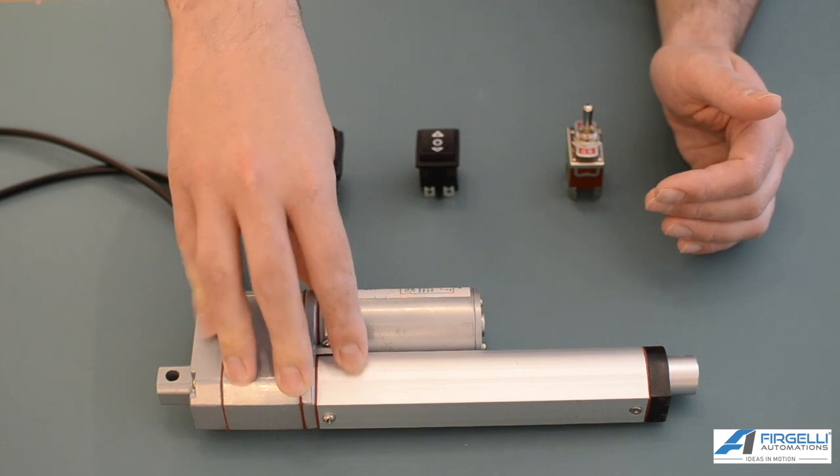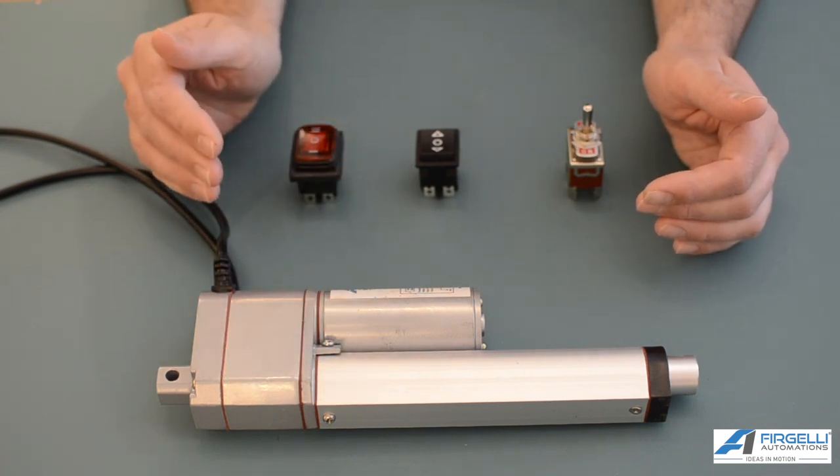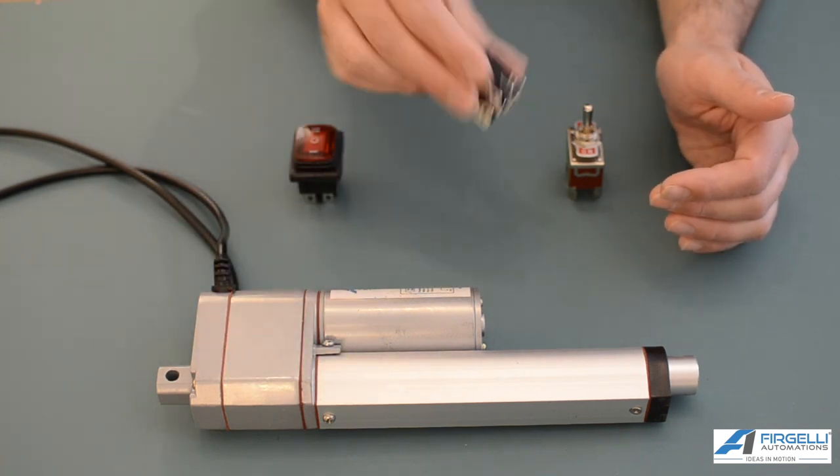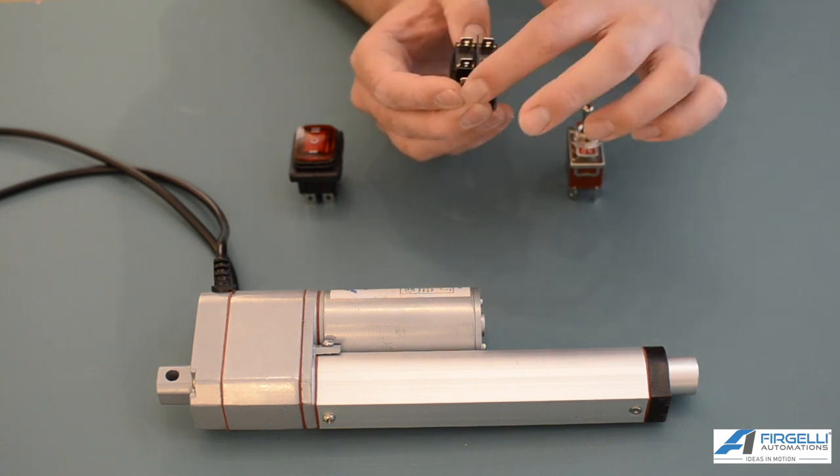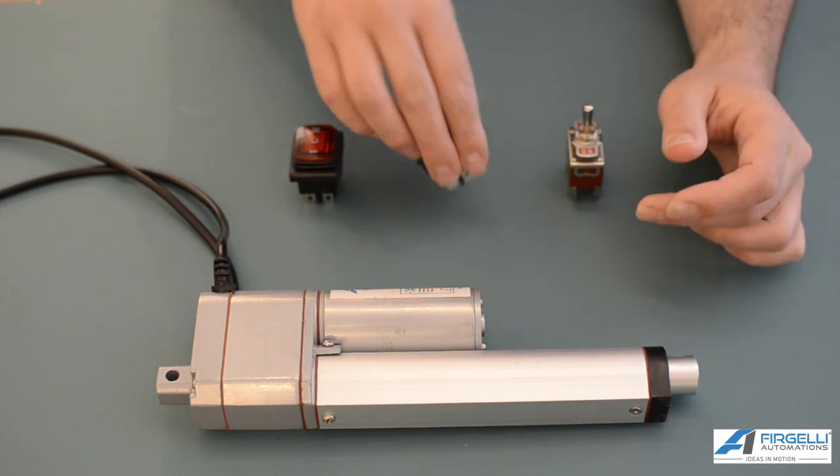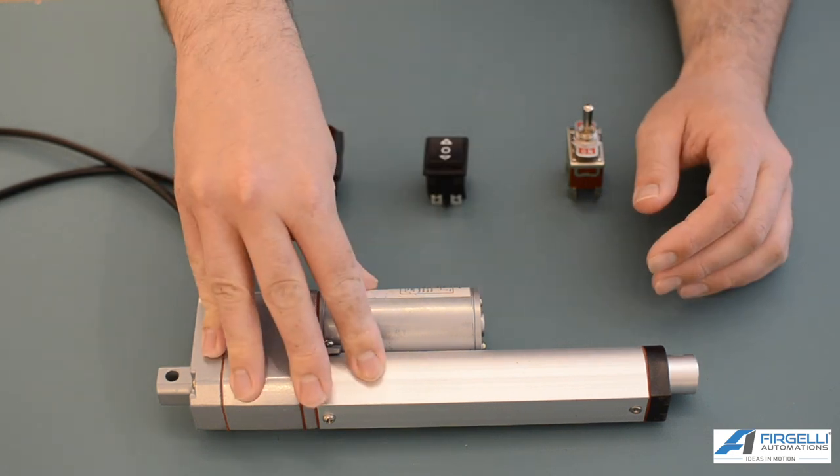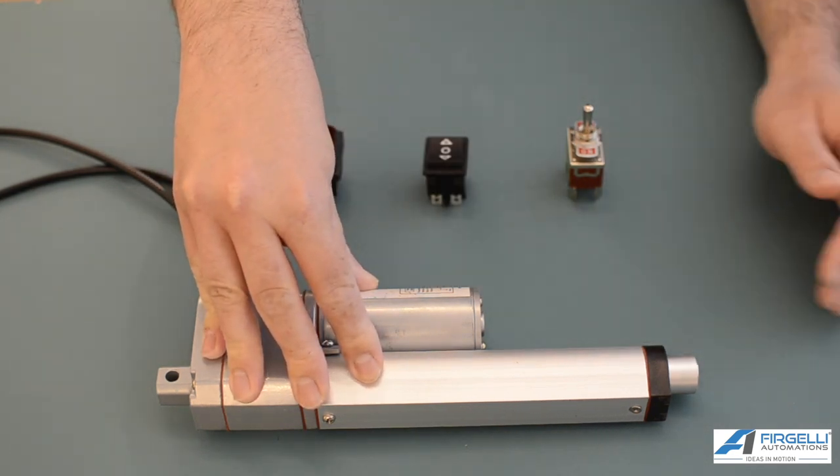To control the linear actuator it's probably best to go with a double pole double throw switch. That's a switch that has two internal circuits and two on positions. This will allow us to flip the voltage to the linear actuator allowing us to extend and retract it.